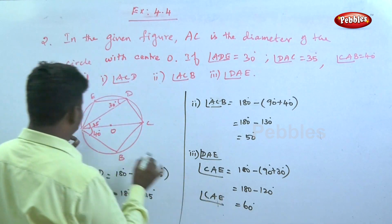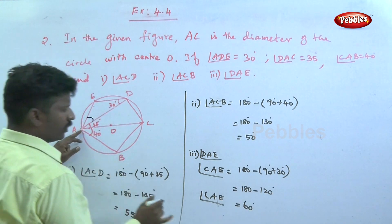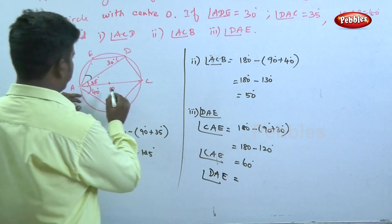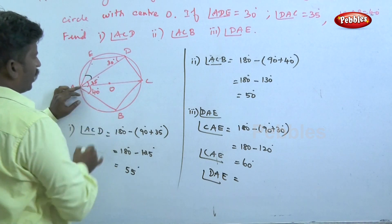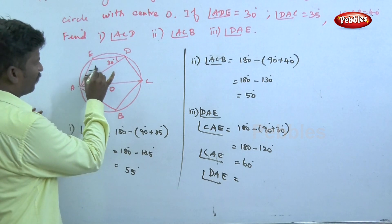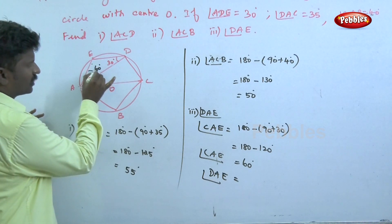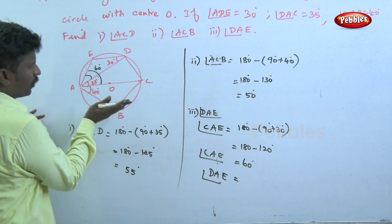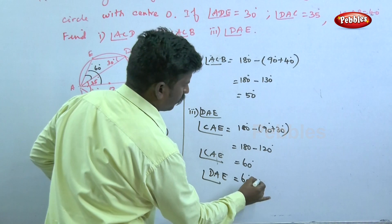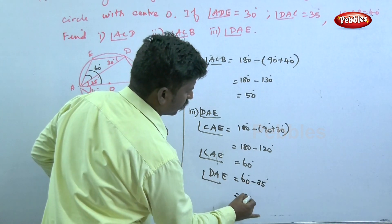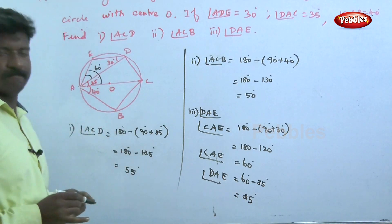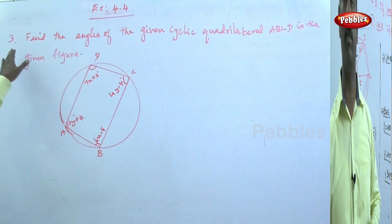Now find angle DAE. We know angle CAE is 60 degrees. Since CD subtends 35 degrees, we subtract: 60 degrees minus 35 degrees equals 25 degrees. So the answer for angle DAE is 25 degrees.